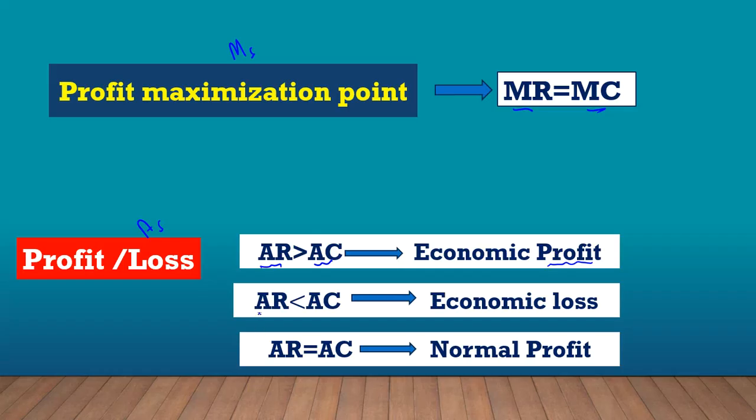But if the AR is less than the cost, then the business is making an economic loss. But where the A is equal, in other words, where the AR equals to the AC, now the business is making a normal profit. Let us look at this graphically.